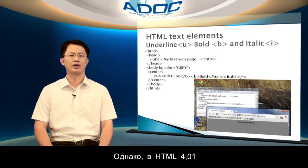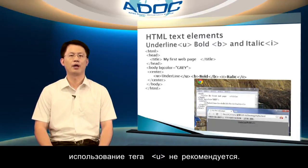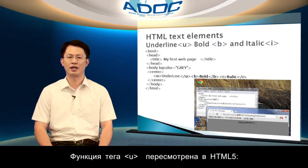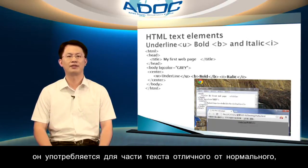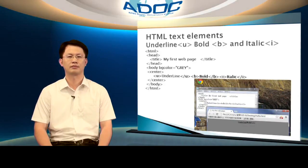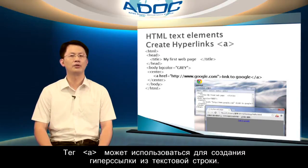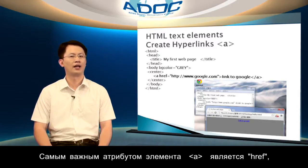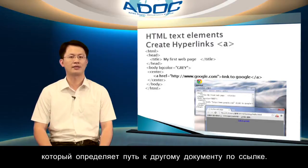However, in HTML 4.01, the U element is deprecated. The U element is redefined in HTML5. It represents some text that should be different from normal text, such as misspelled words or proper nouns in Chinese. We can use the A element to create a hyperlink with string text. The most important attribute of the A element is the href attribute, which indicates the link's destination.